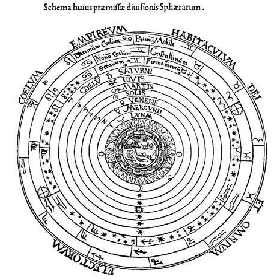General understanding of the dimensions of the universe derived from the nested sphere model reached wider audiences through the presentations in Hebrew by Moses Maimonides, in French by Gossuin of Metz, and in Italian by Dante Alighieri.